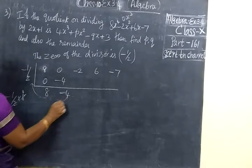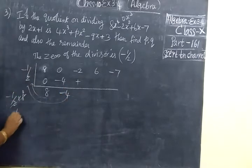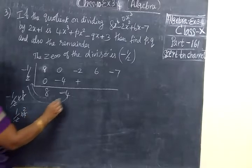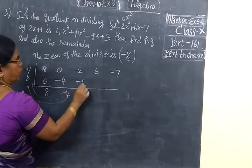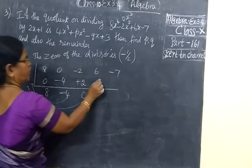Now you multiply. First minus into minus is plus. So half into 4, cancel you are getting 2. Then it is 0. Now you know 0 into something is 0.